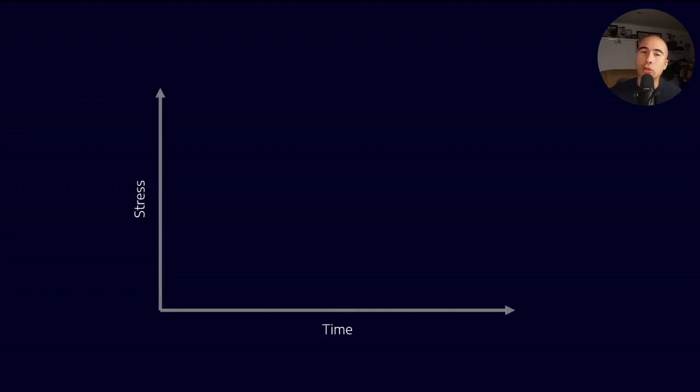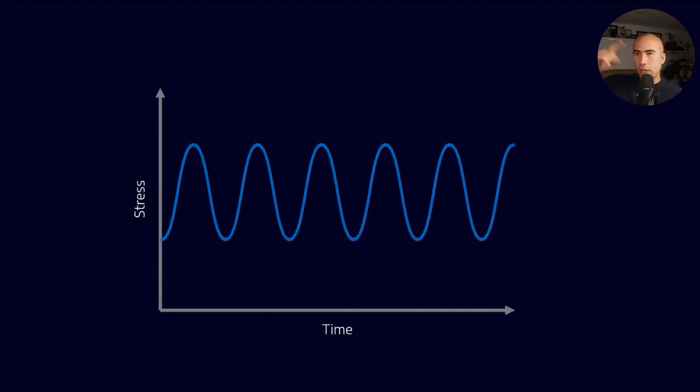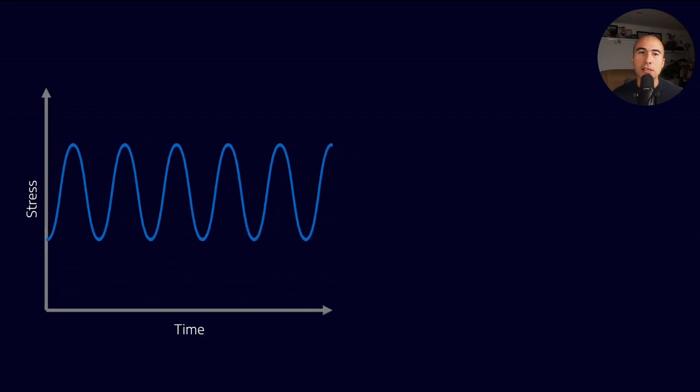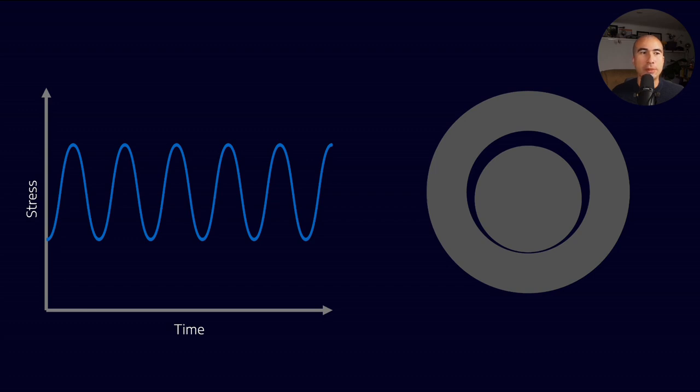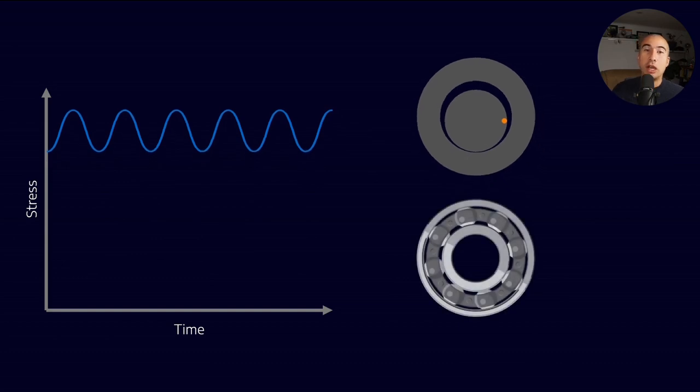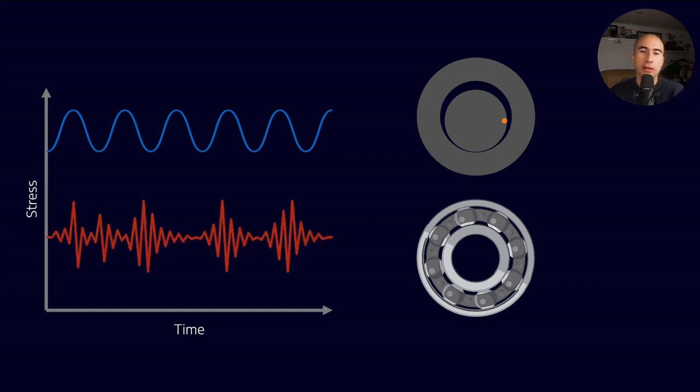We're trying to avoid the fatigue limit. If we have cyclic stresses - and I get it, if you're doing vibration analysis, the wave signature is much more complicated - we're simplifying here. In a rolling element bearing, there are many rotating components: the cage, rolling elements, inner diameter, outer diameter, and other vibrations creating a complicated waveform.